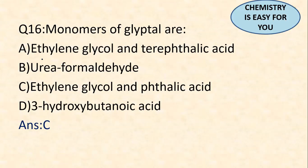Question 16: monomers of Glyptal are — the answer is option C — ethylene glycol and phthalic acid. Note it is phthalic acid, not terephthalic acid. Whenever you come across the name of a polymer and its monomers, write it down, because these can be repeated questions. The monomers of Glyptal are ethylene glycol and phthalic acid.